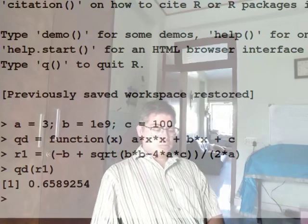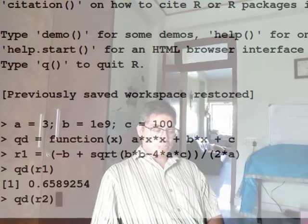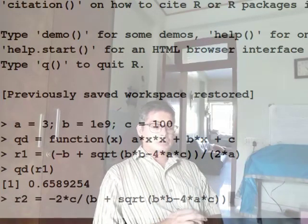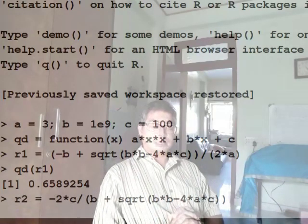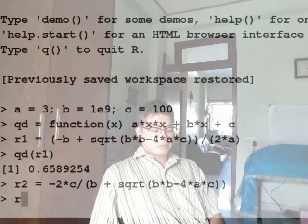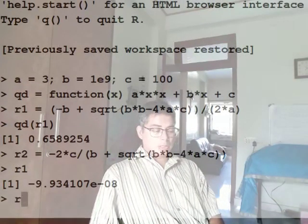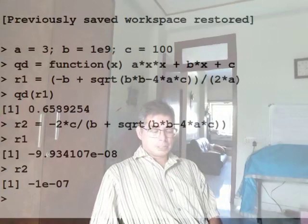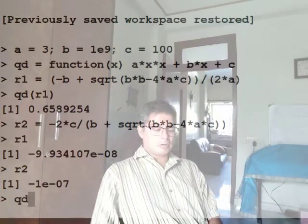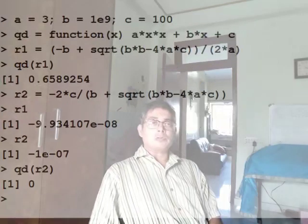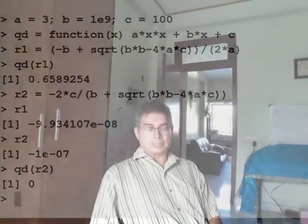Now I will use that other expression. I will call it r2 which is minus 2ac divided by b plus square root of b square minus 4ac. And let me just see what is the value of r1. This is r1 and this is r2. They are not too far when you are printing them like this. But let's try the value of the quadratic at r2. And you get 0 this time.